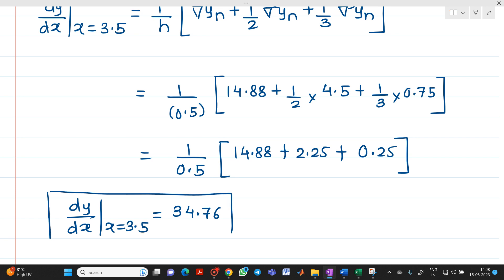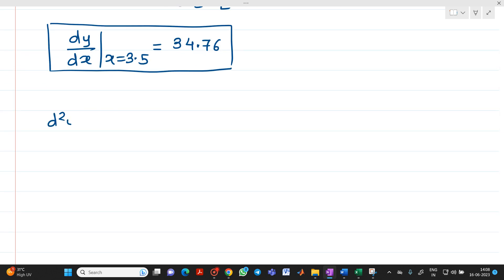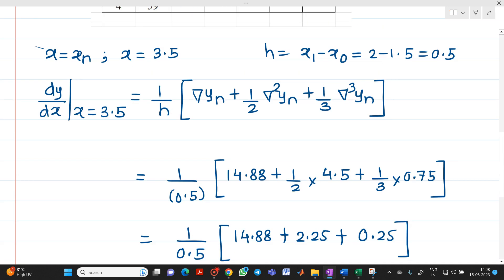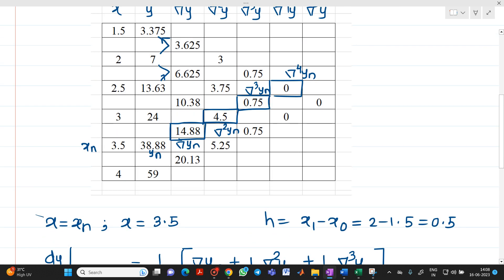Next we have to find out what is the value or answer of d square y upon dx square at x equal to xn, that is at x equal to 3.5. So here if you see, what is the formula: 1 upon h square into bracket del square of yn plus del cube of yn. Now here no need to take del raise to 4 because del raise to 4 is equal to 0.